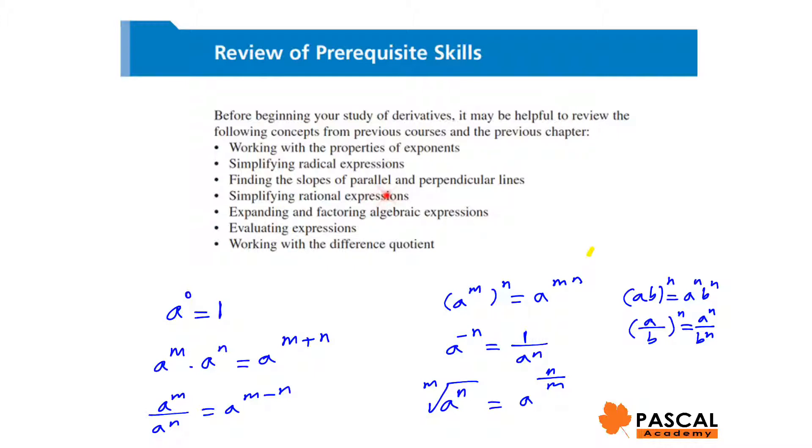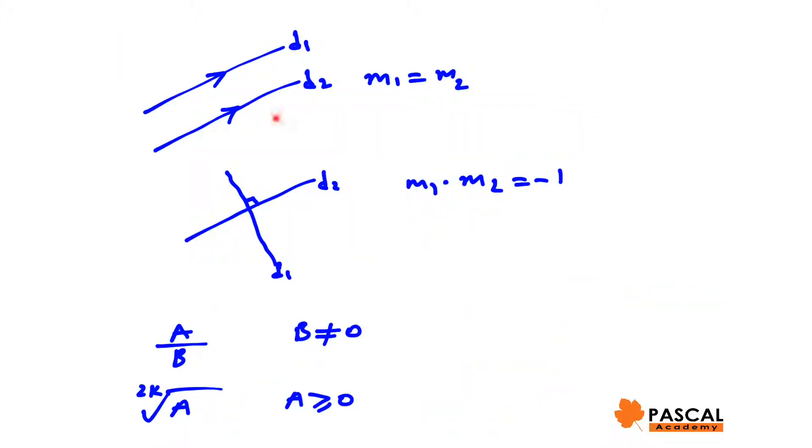Finding the slopes of parallel and perpendicular lines. Two lines, d1 and d2, are parallel when their slopes are the same. They are perpendicular when slope of one of them is negative reciprocal of the other one.